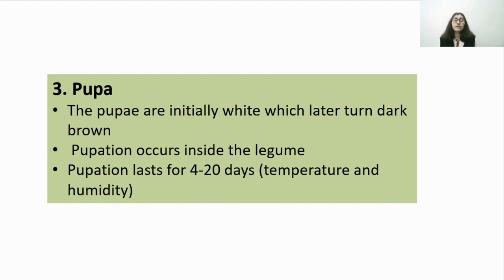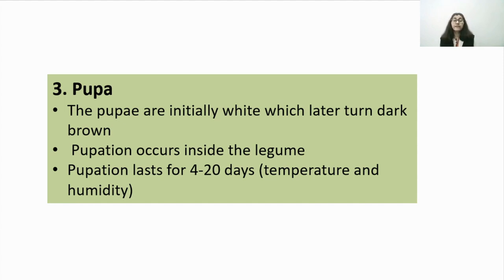The third stage is the pupal stage. The pupae are initially white in color and later turn dark brown. Pupation occurs inside the same legume where the larva was present. The pupation period is 4 to 20 days and is dependent upon environmental conditions such as temperature and humidity. In summer, the pupal period is 4 days, and in winter it extends to 20 days.